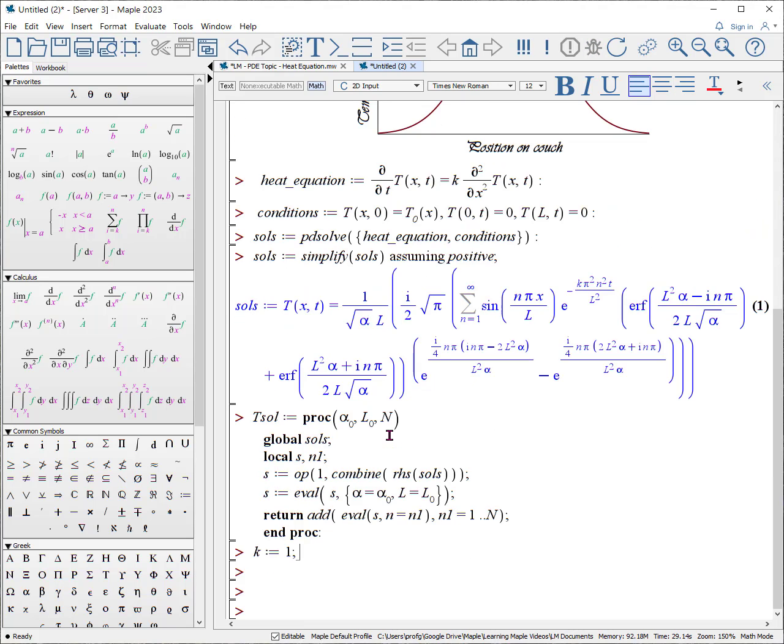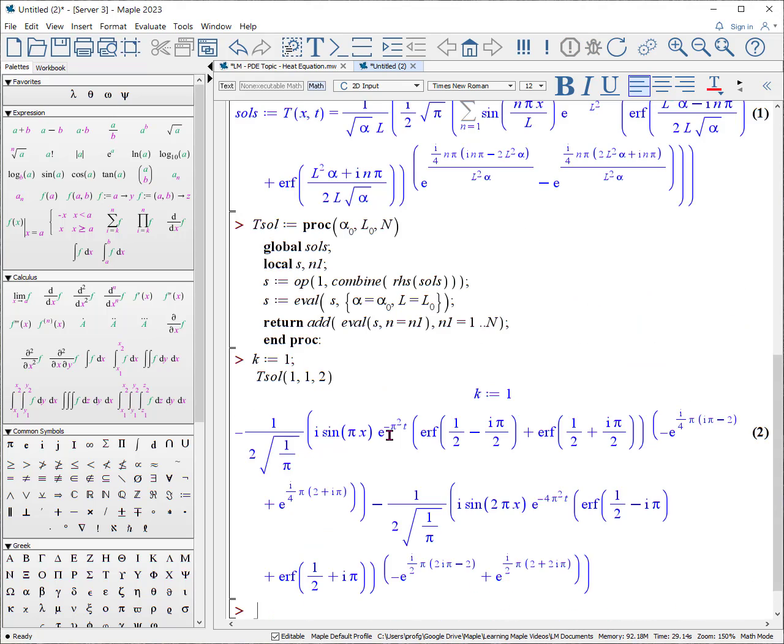One constant that we have not defined is K, so I'm going to make it globally as a value of one. Now let's test to see if T sol returns something that's useful. SHIFT ENTER T sol, and we'll make alpha is equal to, I don't know, 0.1. We'll make L zero equal to one, and let's ask for two terms. You see you can get this term plus this term, and that is what our procedure has done. The only variables that are not defined are T and X.